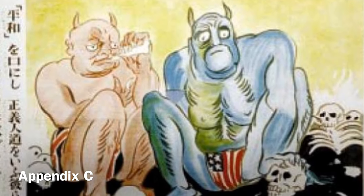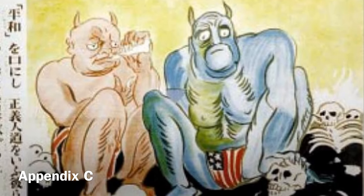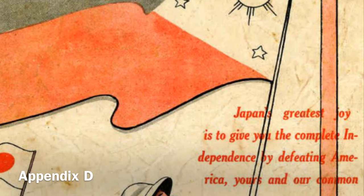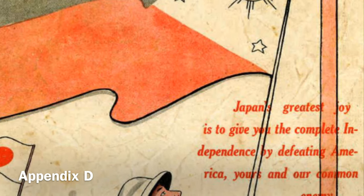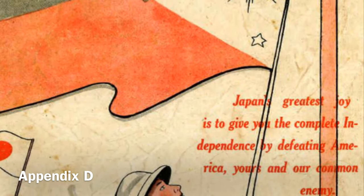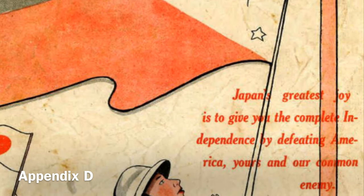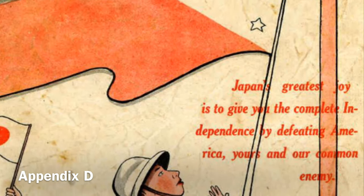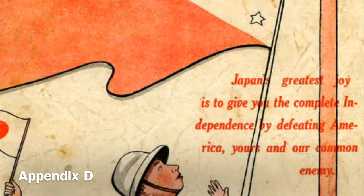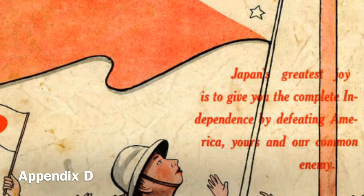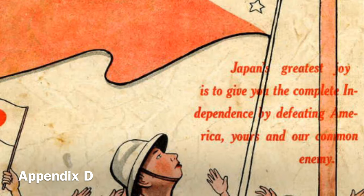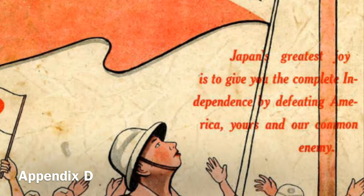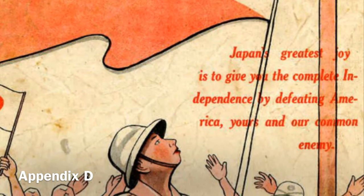Even without this caption, Roosevelt and Churchill are drawn in a beastly form. Appendix D is a very colorful and attractive leaflet that shows Filipino independence, with Japanese and Filipino soldiers cheering. It shows the Japanese soldiers to be on the side of the Filipinos in order to promote the Japanese military in the eyes of the Filipinos. On the other hand, it degrades America in the eyes of the populace because of the caption: "Japan's greatest joy is to give you complete independence by defeating America, yours and our common enemy."